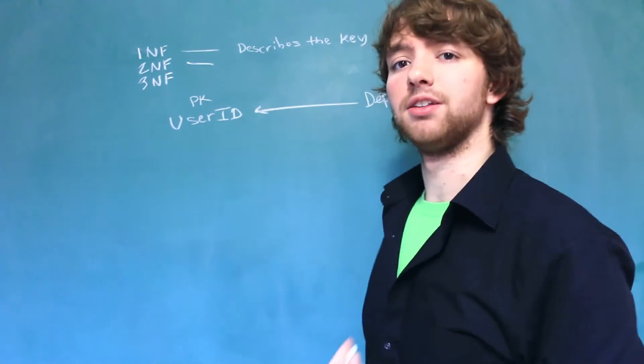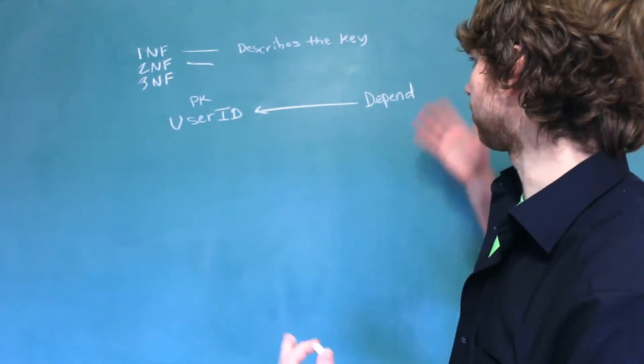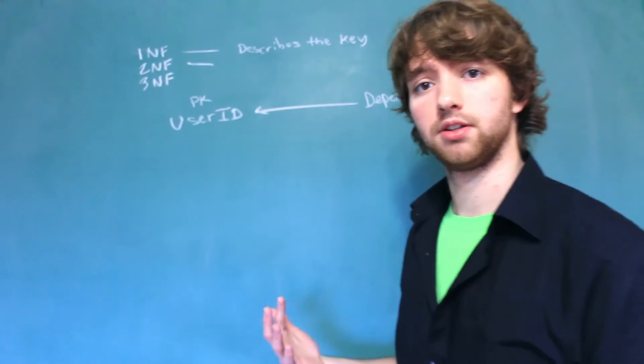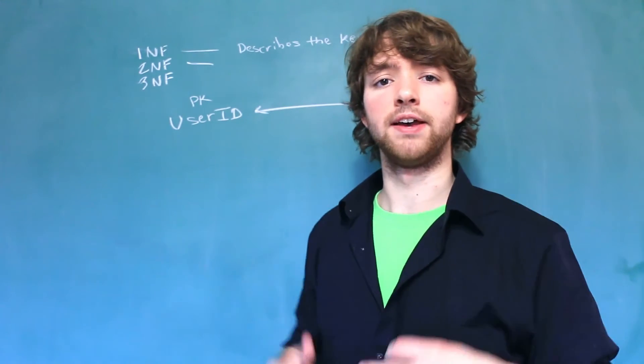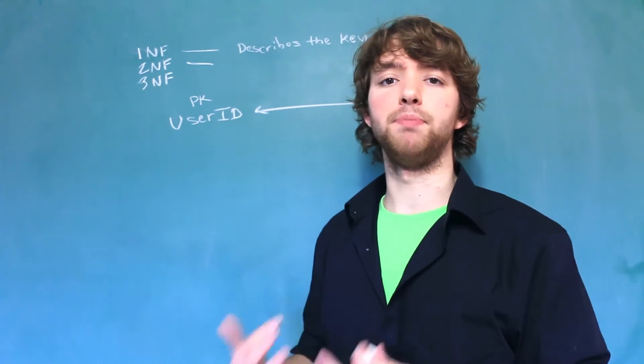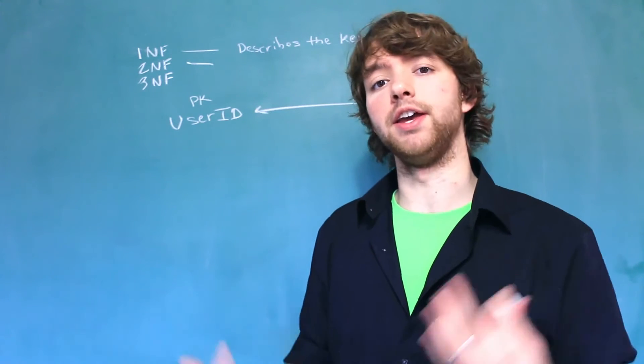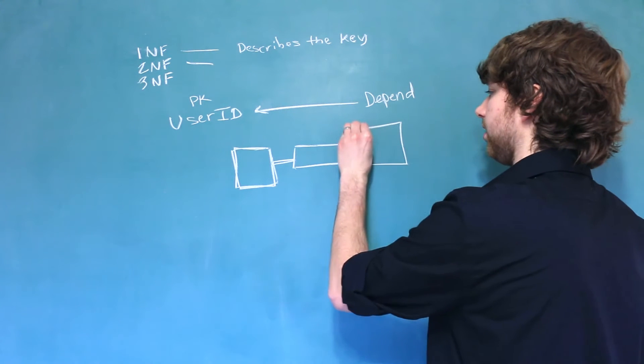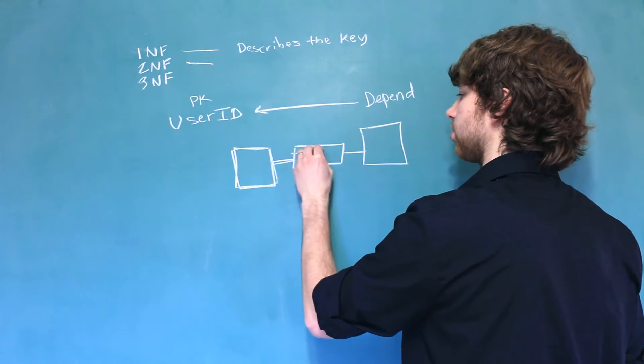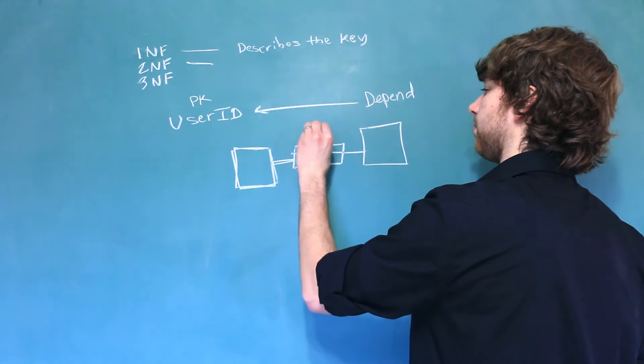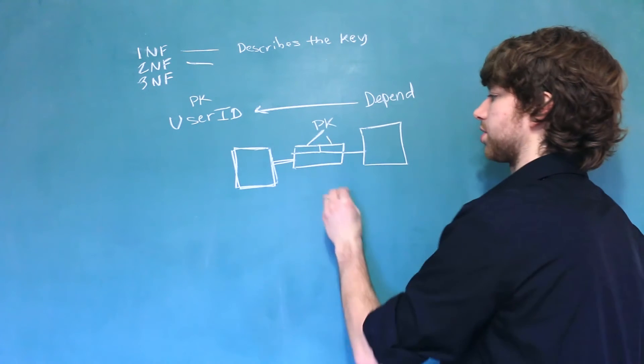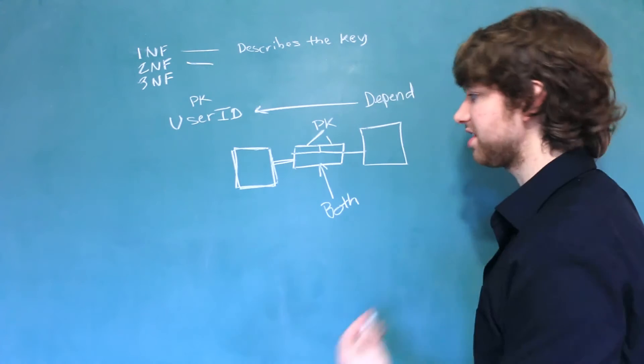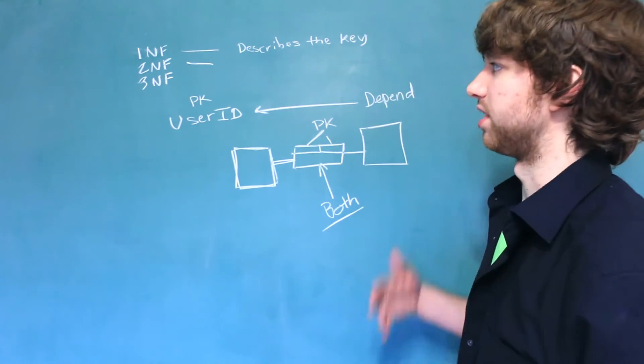Now, with second normal form, things get a little bit more complicated because we no longer just have this simple dependency. We have what's known as a partial dependency. Essentially, what second normal form says is that every column needs to depend on the entire key if we have multiple columns. This is most common in many-to-many relationships. That's because we'll often have a combination of columns here as the primary key, which means any data in this table needs to depend on both. If it doesn't depend on both, it's what's known as a partial dependency.